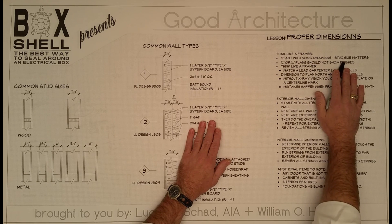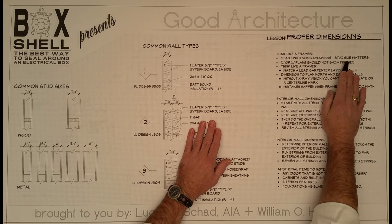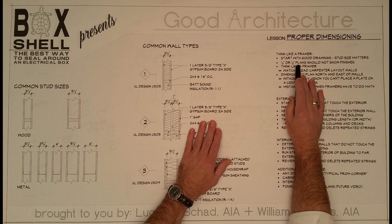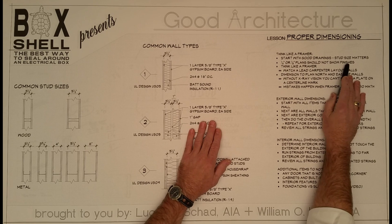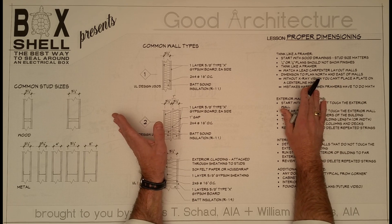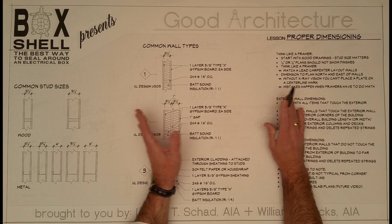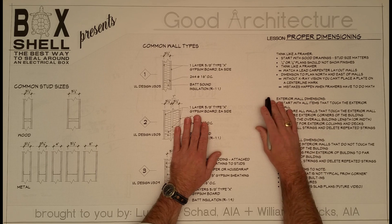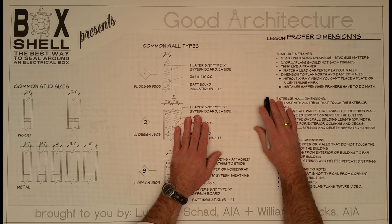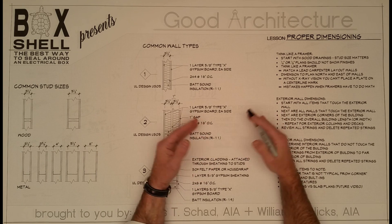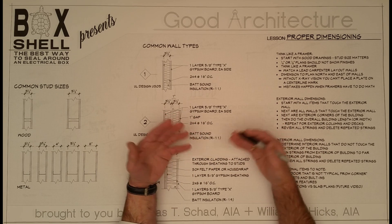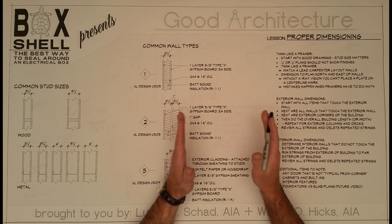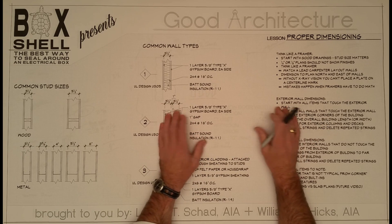Start with good drawings — stud size matters. Quarter and eighth-inch plans should not show finishes. If you want to show finishes, do a half-inch plan, maybe accompanied by an interior elevation, which allows you to show cabinets and other items and how they fit within those finishes.